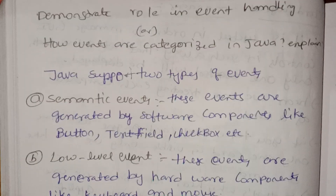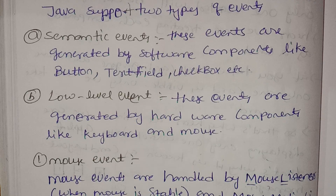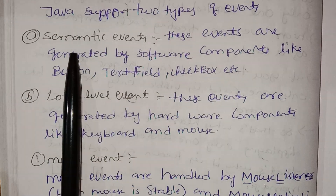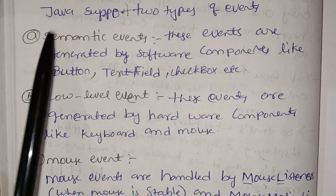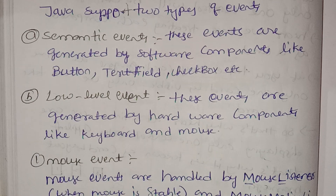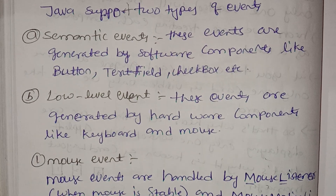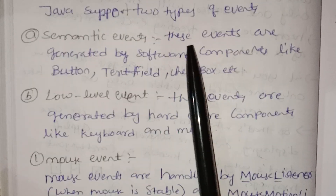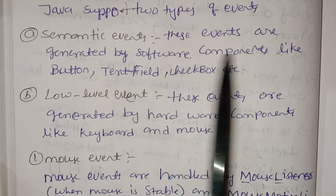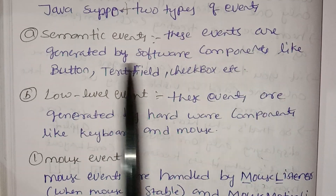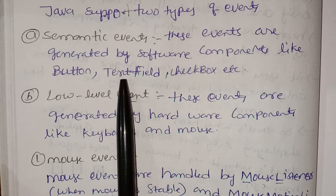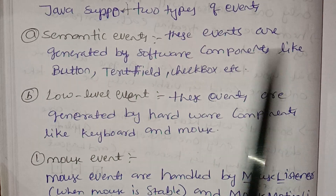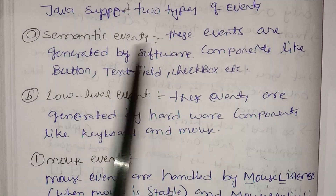Java supports two types of events: Semantic events and Low-level events. Semantic events are generated by software components like buttons, text fields, and checkboxes.